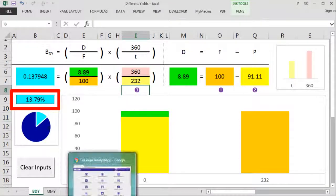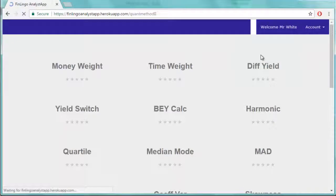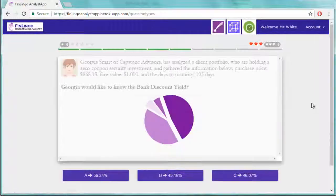which is 13.79%. Now let's try an example on finlingo.com to really burn this equation into our brains.